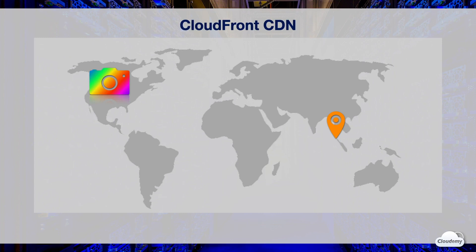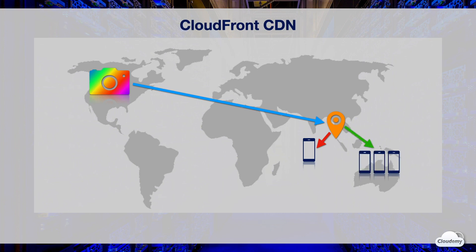Here is how CloudFront CDN works. Suppose you are running a photo sharing website and storing images in an S3 bucket in the US. Your users are in Singapore. When users download photos for the first time, they are delivered from the S3 bucket in the US through the CloudFront network and cached in the edge location in Singapore. Later on, other users in Singapore can download the cached content from the edge location directly.